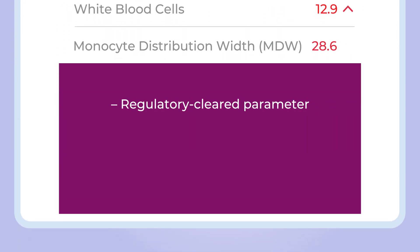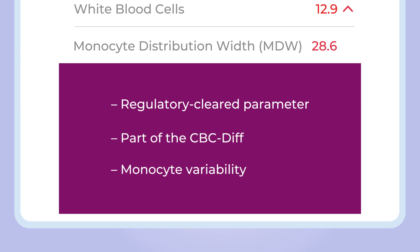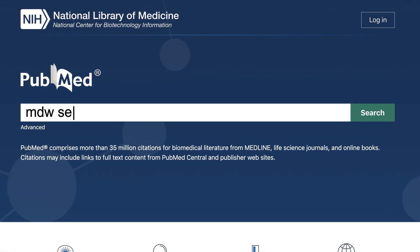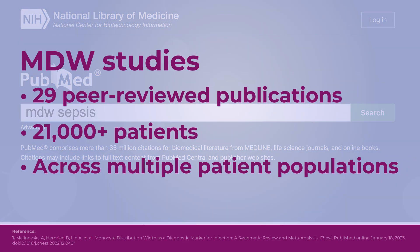With the flip of a switch, early sepsis detection becomes a reality with the most ordered blood test. MDW — Monocyte Distribution Width — is a regulatory-cleared parameter that helps clinicians determine the risk of sepsis by measuring monocyte variability. MDW has been studied for the past decade with more than 29 peer-reviewed publications and over 21,000 patients confirming the robustness and reproducibility of MDW performance in different patient populations.